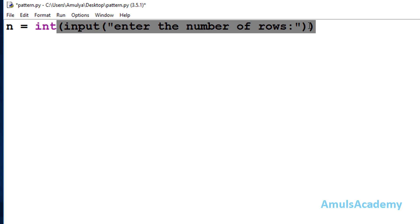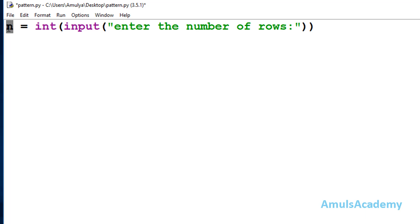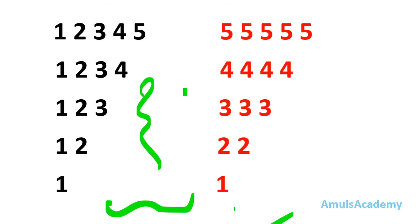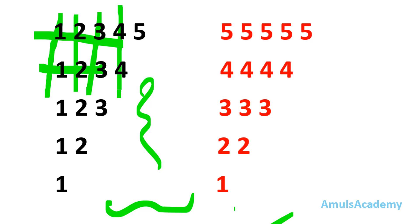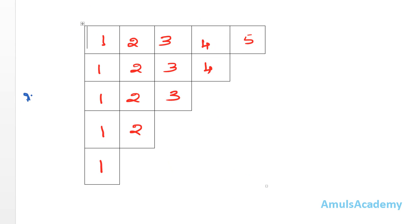Whatever the user enters will now be stored as an integer in variable n. Since we want to print numbers in different rows and columns, we use nested for loops — that is, a for loop within a for loop. First I'll write the for loop for the row, and inside that I'll write the for loop for the column.